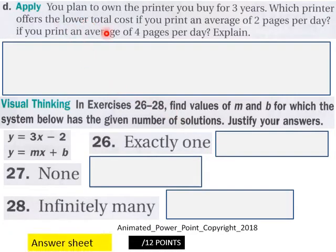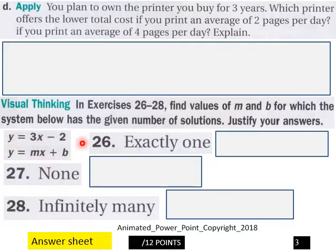Part D, explain means using full sentences. And then visual thinking down here, m and b for each of the system below has a given number of solutions. Justify your answers. So do that. Then you got 12 points here on page 3 for 27 and 28.